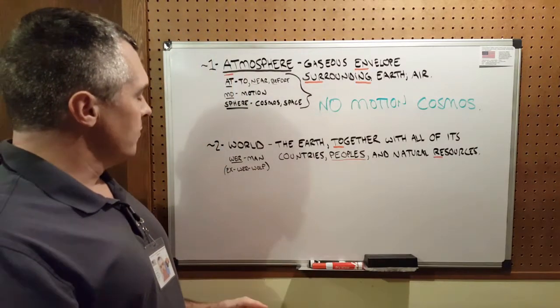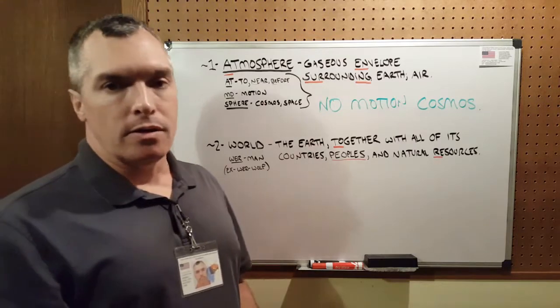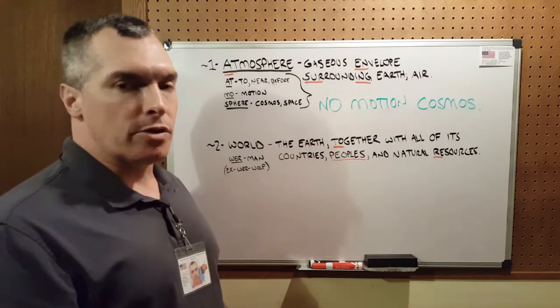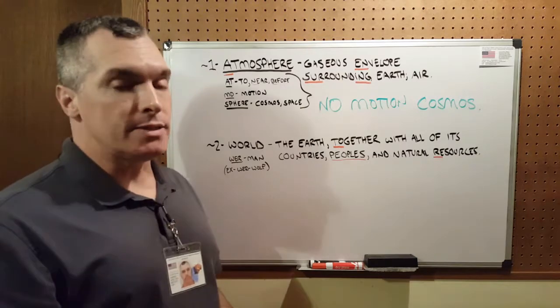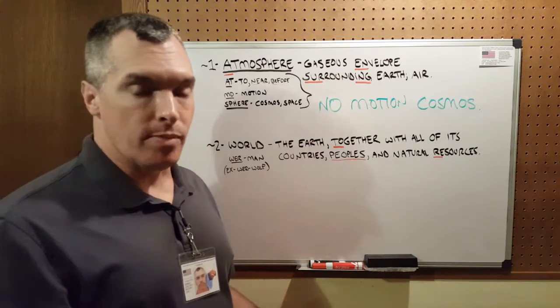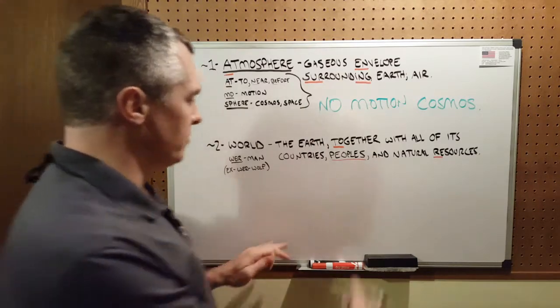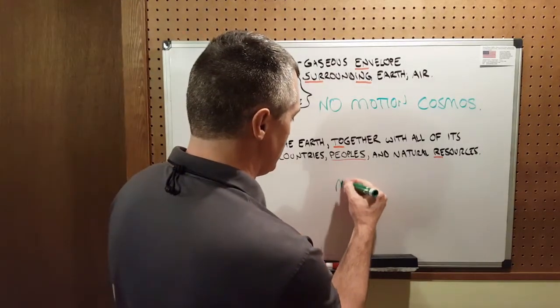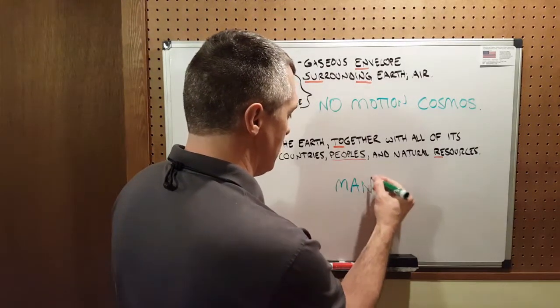The root of world is 'were,' which is proto-Germanic and means man. An example of that would be werewolf, man wolf. So world means man.